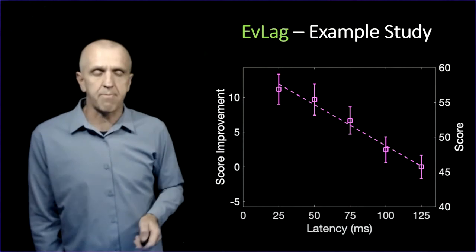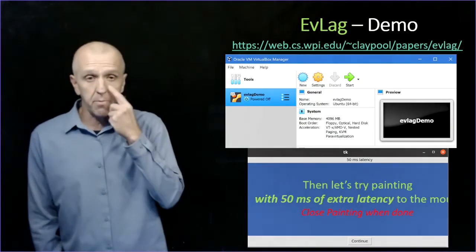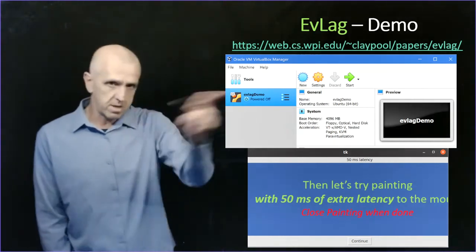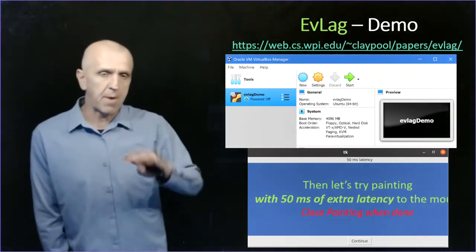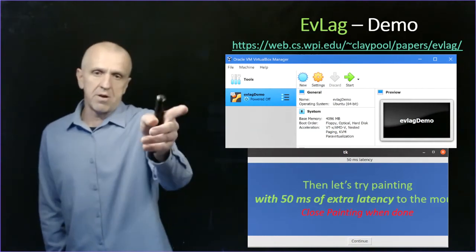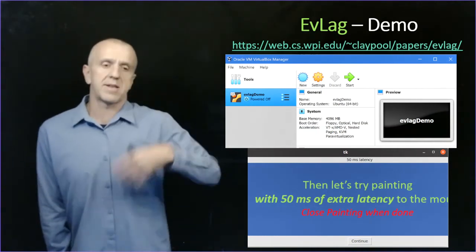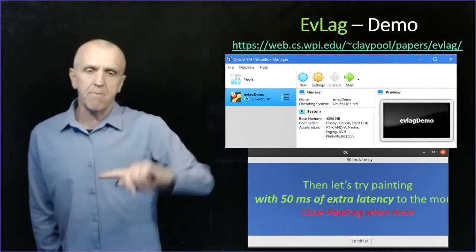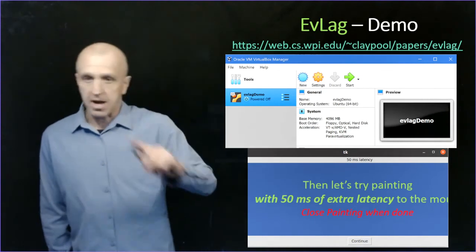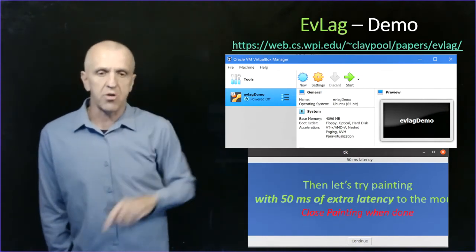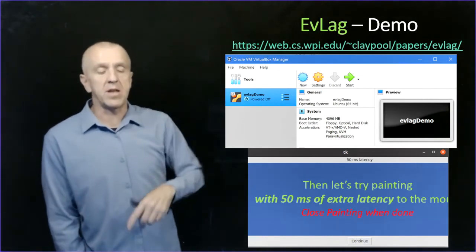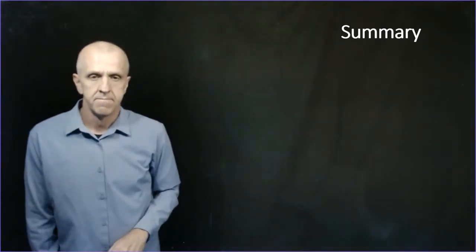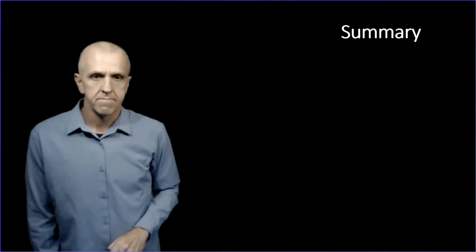This is one example of EvLag use. You can try it yourself. We provided a demo image for this paper. Link above on my webpage, you can find the paper. It's a virtual machine, download it with instructions. It has Linux and EvLag installed. You run a paint application, paint on the screen with different amounts of latency, you can kind of feel how it looks and it walks you through that. You can look at the log files too. You can try that out.